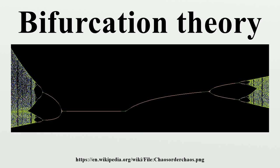More technically, consider the continuous dynamical system: a local bifurcation occurs if the Jacobian matrix has an eigenvalue with zero real part. If the eigenvalue is equal to zero, the bifurcation is a steady-state bifurcation, but if the eigenvalue is non-zero but purely imaginary, this is a Hopf bifurcation.